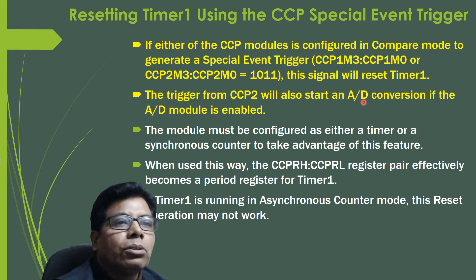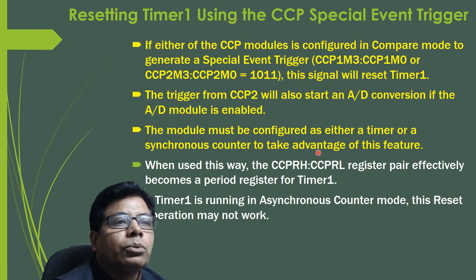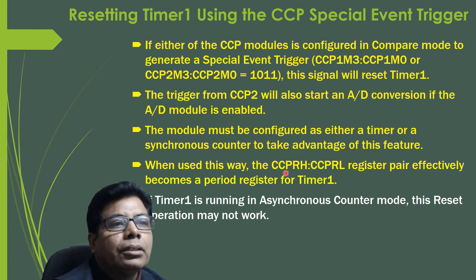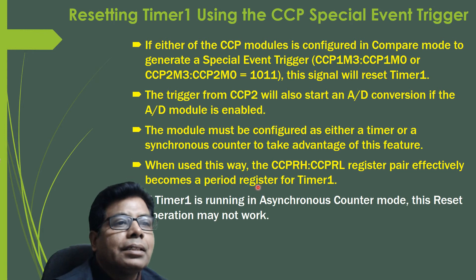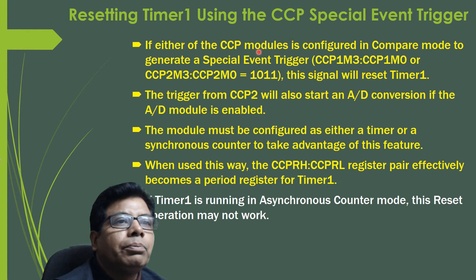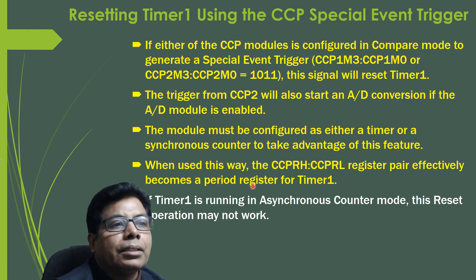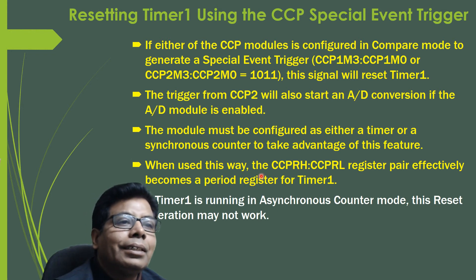The module must be configured as either a timer or a synchronous counter to take advantage of this feature. When used in this way, the CCPR1H and CCPR1L register pair effectively becomes the period register for Timer 1. The details will be covered when we study the CCP module. Note that if Timer 1 is running in asynchronous counter mode, this reset operation may not work.